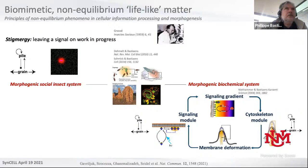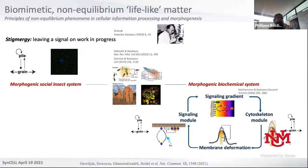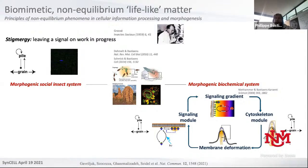So why did we actually engage this endeavor of generating biomimetic non-equilibrium lifelike matter? The whole idea was to understand principles of non-equilibrium phenomena and cellular information processing and morphogenesis. The idea is to bridge scales — how can nanometer-size molecules actually generate or manifest functionality in cells on a micrometer scale? That's three orders of magnitude; if you talk about volume, you're talking about seven orders of magnitude.